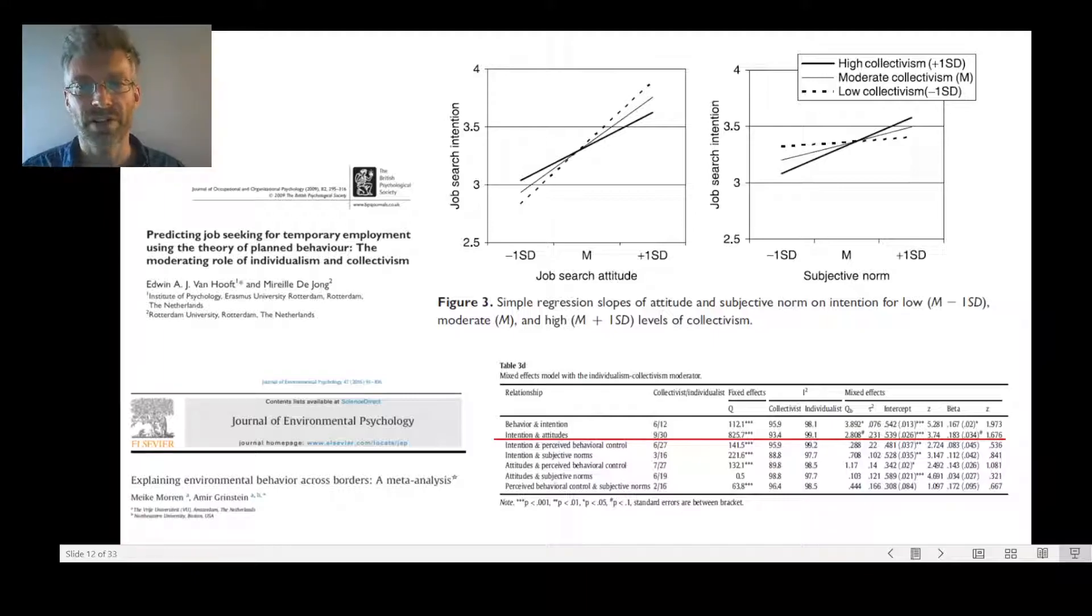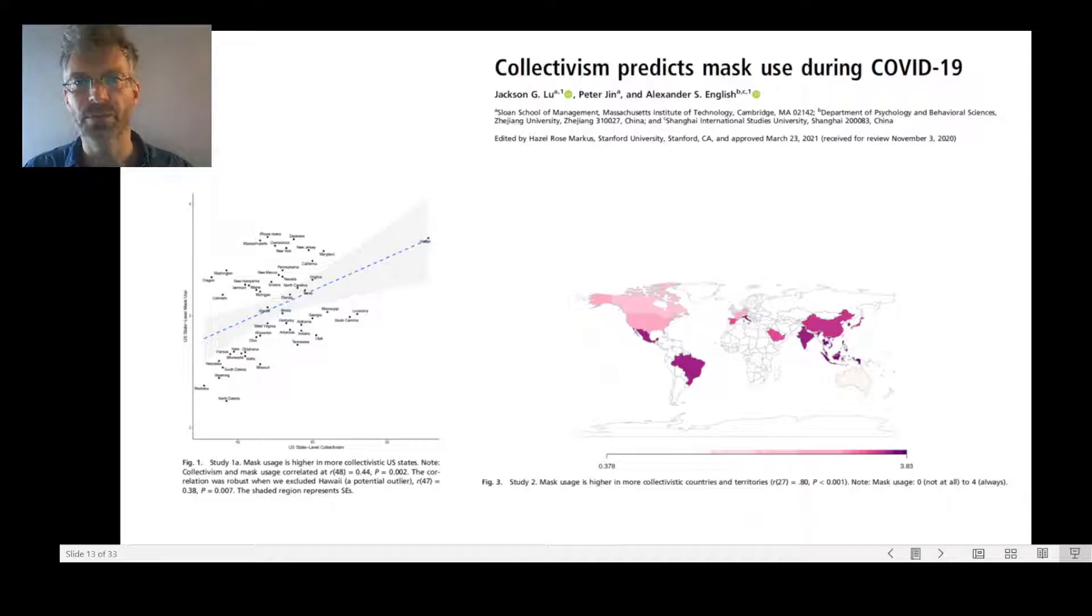A second important moderator from past research on the theory of planned behavior is individualism and collectivism. Individuals who are more individualistic typically show stronger intentions if the attitudes are positive. Subjective norm effects seem to be stronger for individuals that have more collectivistic values and beliefs and also in more collectivistic settings. A recently published study showed that collectivism predicts mask use around COVID.